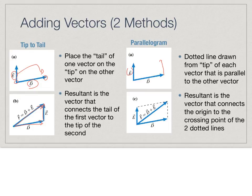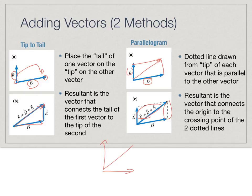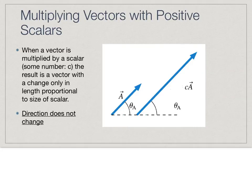In the parallelogram method, I draw a parallel line at the same angle in the same direction, shown with a dashed line. Then I draw a parallel to D on the other side, and wherever these two intersect is my resultant. We'll use this representation when we get to projectile motion discussing X and Y vectors and the resultant. The parallelogram method will come up frequently as we go.